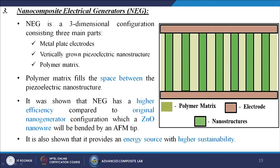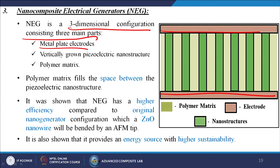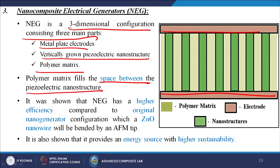The third configuration is the nanocomposite electrical generator (NEG). NEG is a three-dimensional configuration consisting of three main parts: metal plate electrodes (two electrodes), vertically grown piezoelectric nanostructures, and a polymer matrix. The polymer matrix fills the space between the piezoelectric nanostructures like a pillar structure with gaps filled by polymeric matrix. NEG has shown higher efficiency compared to original nanogenerator configurations using zinc oxide nanowires bent by an AFM tip, and also provides an energy source with higher sustainability.